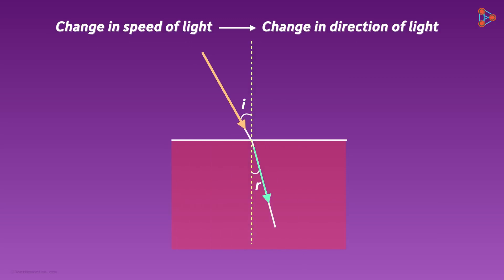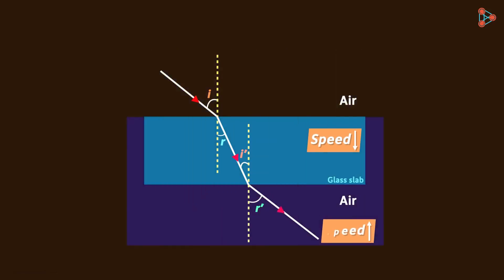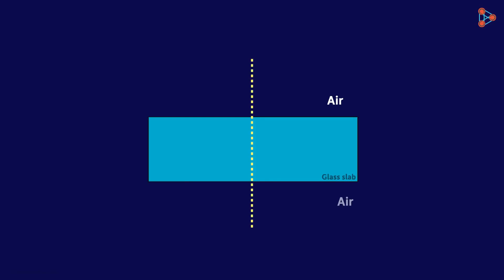Why is there a change in direction of light? Because there is a change in speed. Light travels at maximum speed in air — 3×10⁸ meters per second — while in glass it is 2×10⁸ meters per second. So when light goes from air into glass, its speed decreases. When it exits from glass back into air, its speed increases again.